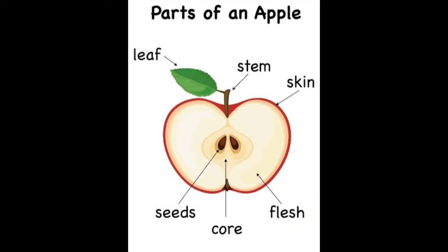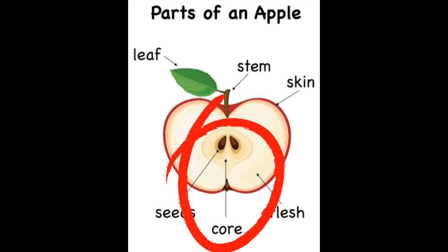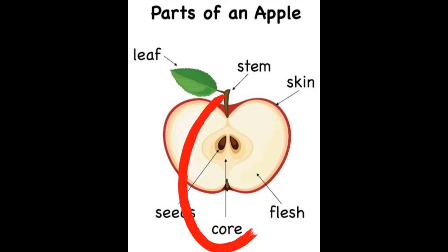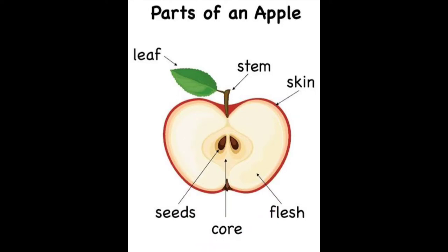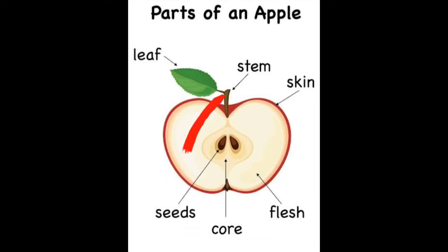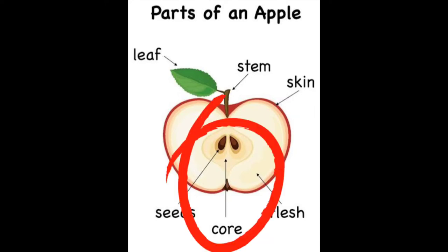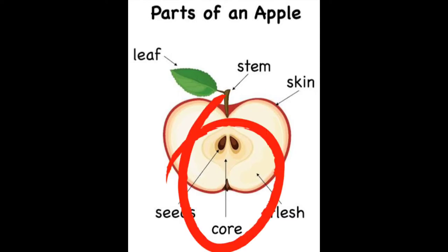We are almost done with the parts of an apple. The next part is the core. When you cut an apple into two, you can always see the core in the middle of the apple fruit. The shape of an apple core is almost like a circle and always placed in the middle. Selanjutnya adalah bagian inti dari buah apple. Bagian ini selalu berada di tengah dan anak-anak bisa melihatnya ketika kalian memotong buah apelnya menjadi dua. Bagian inti berbentuk mirip seperti lingkaran dan selalu terletak di bagian tengah dari buah apple.